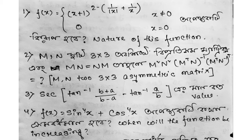The second number question: m and n are 3×3 matrices and mn is equal to nm. Find the value of (m² n²)(mᵀ nᵀ) whole to the power inverse, and (mᵀ n⁻¹) whole to the power transpose.